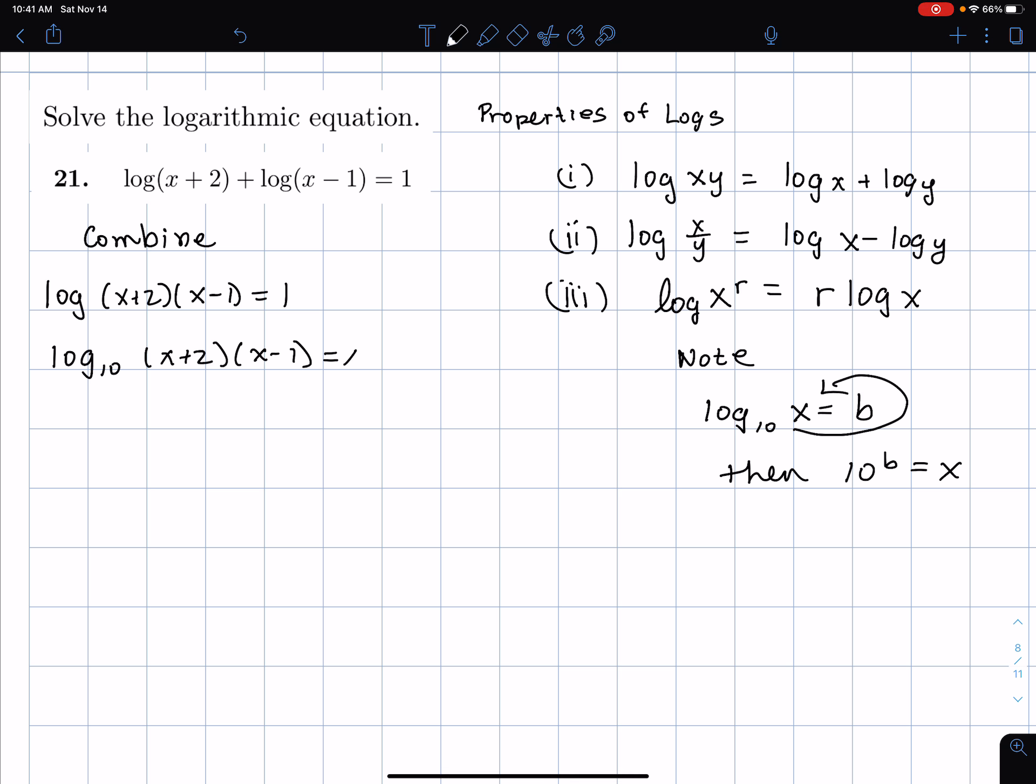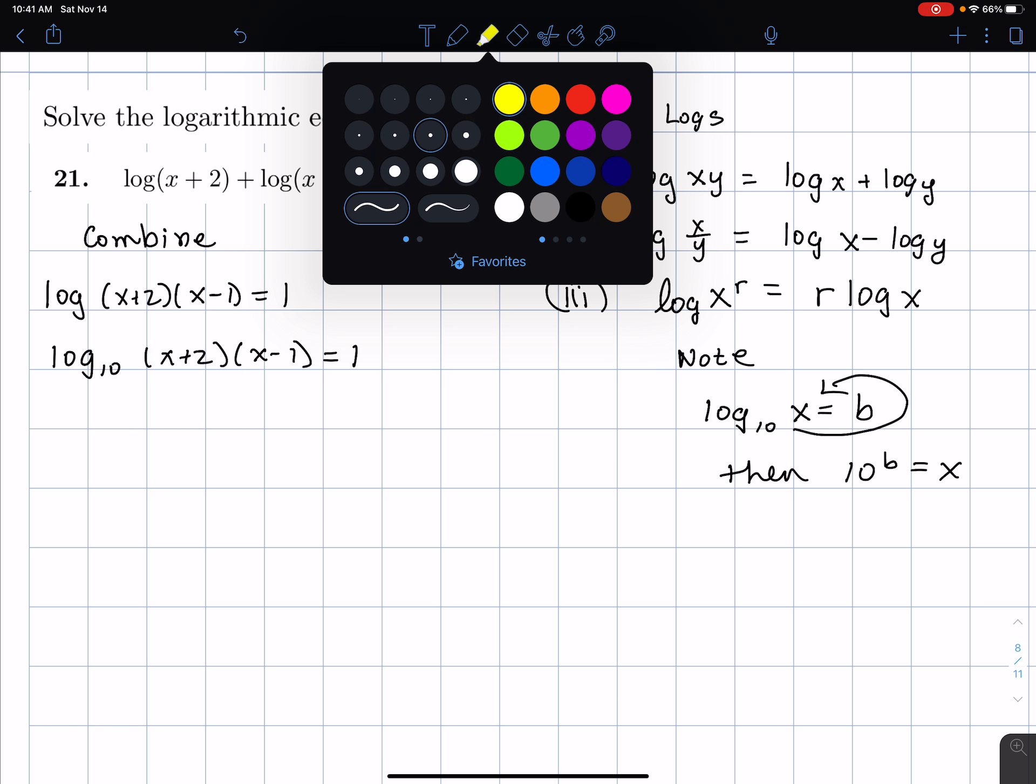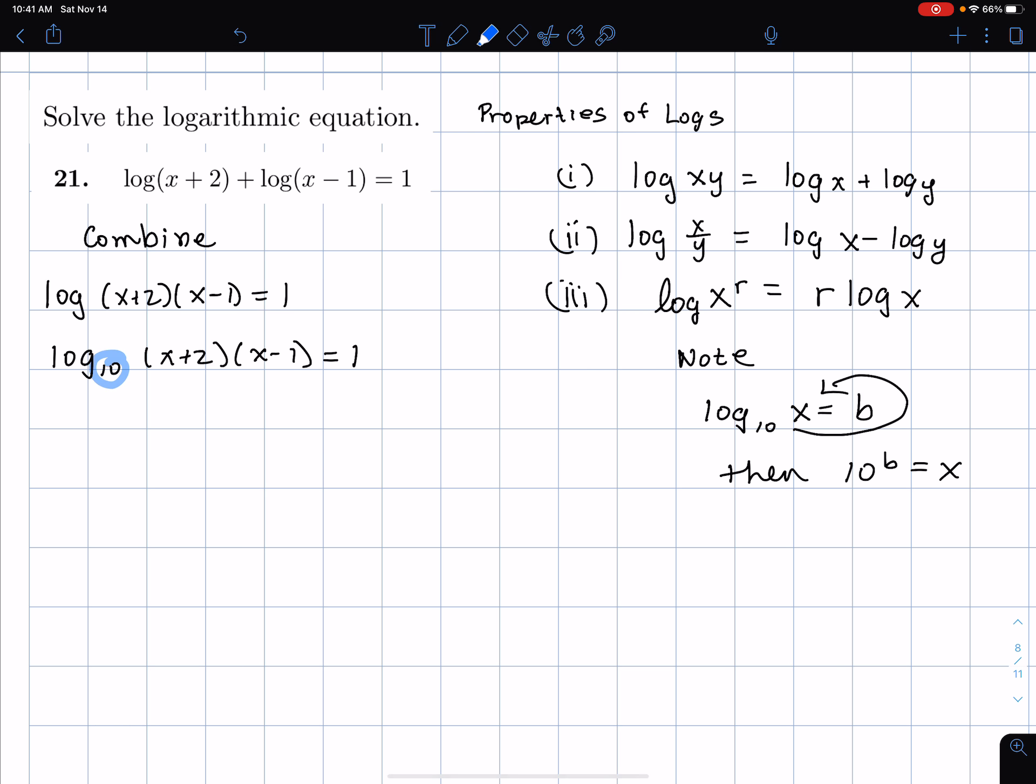And so what I'm going to do is I'm going to write as an exponential equation. So I take that 10 and I do this little loop here, which sort of doesn't mean anything, but except that maybe it helps. So 10 to the 1 power equals (x+2) times (x-1).